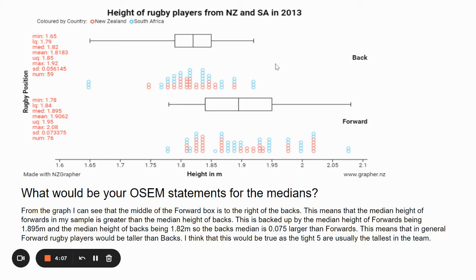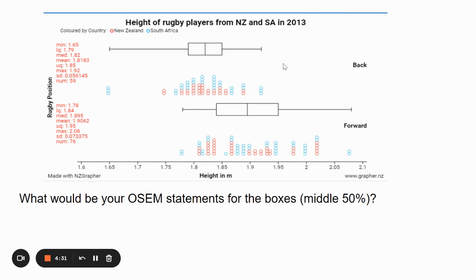So the forwards' median is 0.075 meters larger than the backs'. That's the middle value in this set of data. This means that in general, forward rugby players in the sample would be taller than backs. I think this would be true because forwards includes the locks and loosies, who are usually the tallest players in the team.